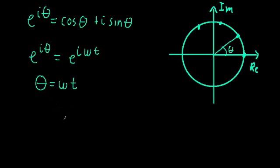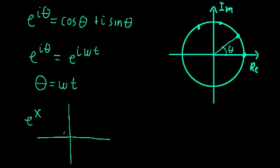That's really important to realize, because we never think about the exponential function that way when working in the real domain. In the real domain, something like e to the x just goes up exponentially. But when the exponent is purely imaginary, it describes circular motion in the complex plane.